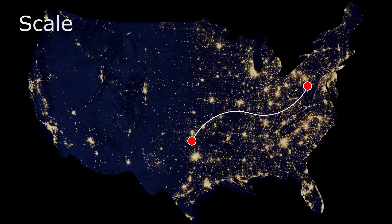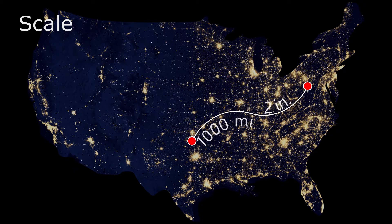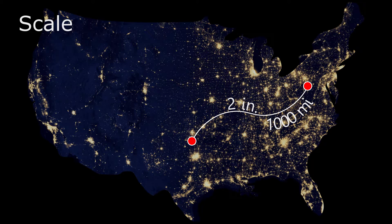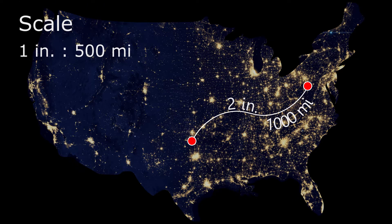For example, if you said the curve was about two inches long and the actual distance was about a thousand miles long, then your estimated scale would be the ratio one inch to 500 miles.